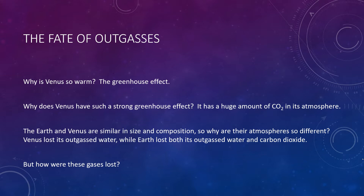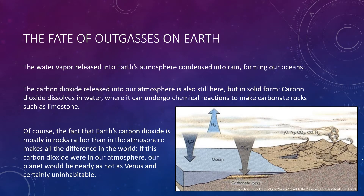We can easily account for the missing gases on Earth. The huge amounts of water vapor released into our atmosphere condensed into rain, forming our oceans — in other words, the water is still technically here, but it's mostly in liquid rather than gaseous form. The huge amounts of carbon dioxide released into our atmosphere is also still here, in solid form. Carbon dioxide readily dissolves in water, where it can undergo chemical reactions to make carbonate rocks such as limestone.